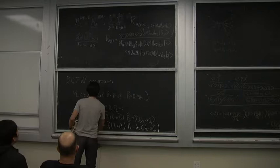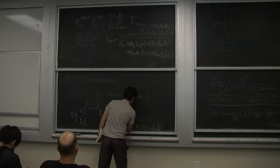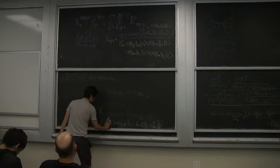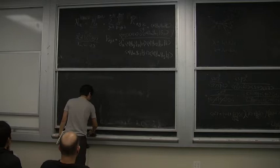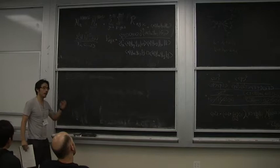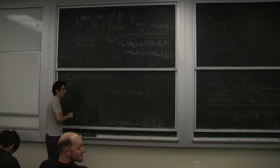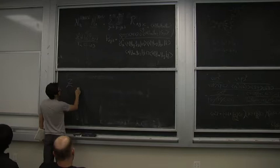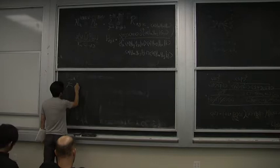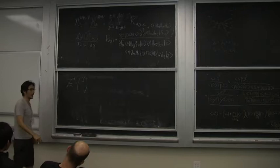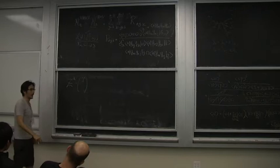We now introduce what are called momentum twistors to make the dual conformal symmetry manifest. The momentum twistor Z is a four-component object: the first component is the usual SL(2,C) lambda, and the second component is a new variable mu-tilde_{α̇}. The important feature is that we add an incidence relation: mu-tilde_{α̇} equals x_{αα̇} lambda^α.